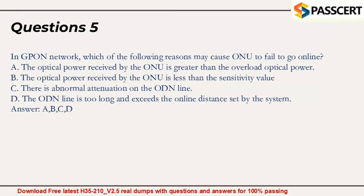Question 5. In a GPON network, which of the following reasons may cause an ONU to fail to go online? A. The optical power received by the ONU is greater than the overload optical power. B. The optical power received by the ONU is less than the sensitivity value. C. There is abnormal attenuation on the ODN line. D. The ODN line is too long and exceeds the online distance set by the system. Answer: A, B, C, D.